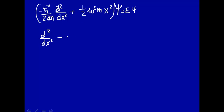That becomes -(ω²m²/ℏ²)x² operating on 𝜓. That's equal to, multiplying by -2m, -2mE/ℏ² times 𝜓.